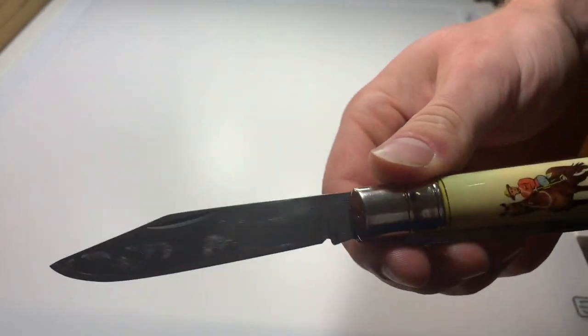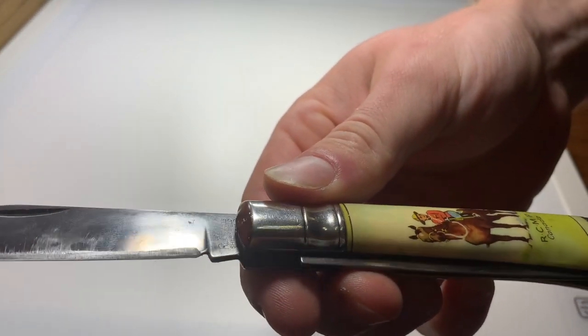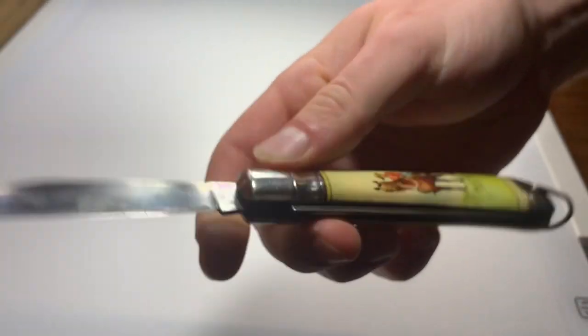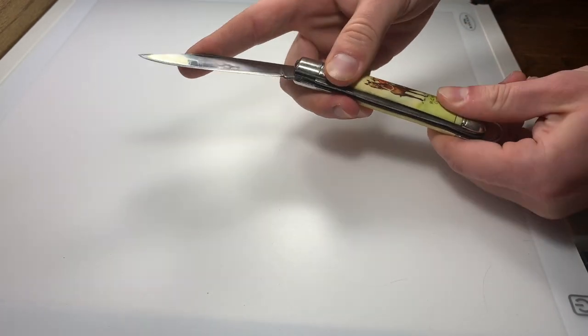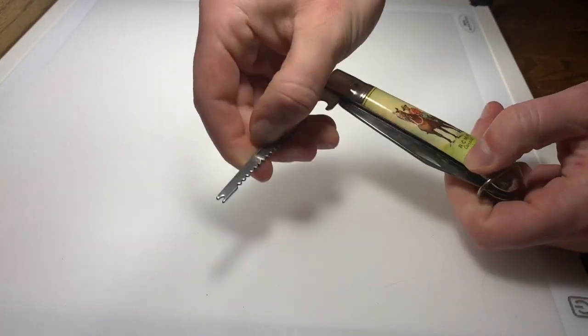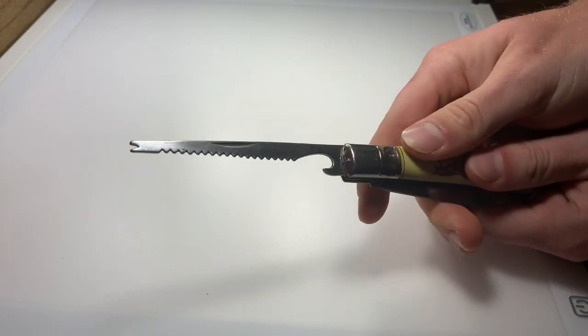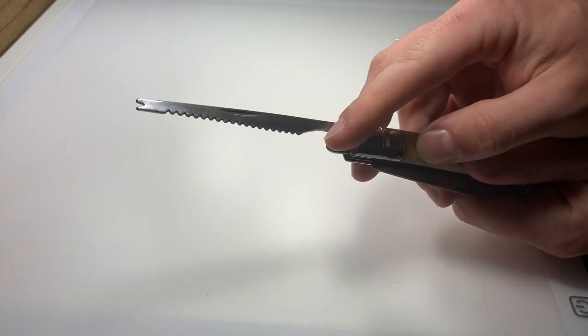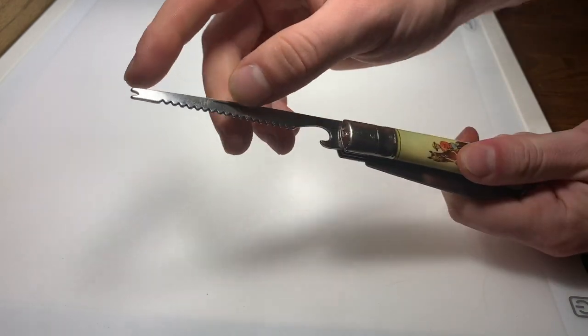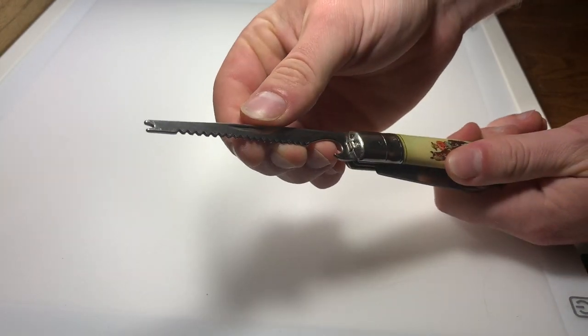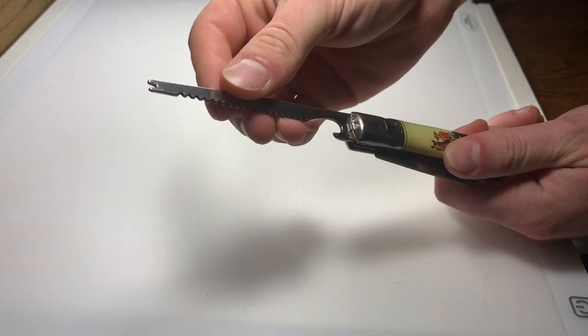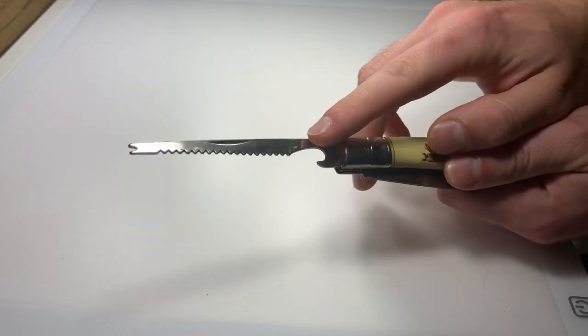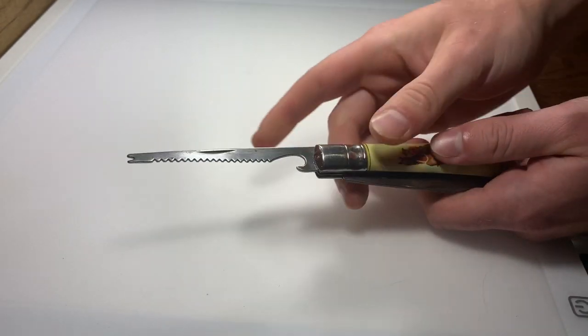And we can see on the tang stamp here Richards Sheffield with a light post. So that's the blade and what makes this a fish knife is this tool here which is a bottle opener, a fish descaler, and a hook degorger. So for descaling your fish and for removing the hook if the fish swallows the hook, plus opening any bottles that you might have out when you go fishing.